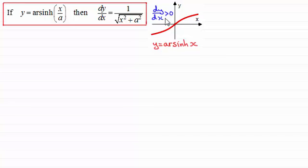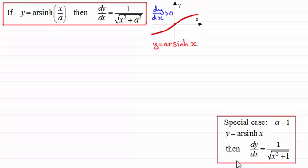So dy/dx is always going to be positive. Now, if a is equal to 1, we get the special case: y equals the inverse sine of x gives dy/dx equal to 1 divided by the square root of x squared plus 1. I would encourage you to try and remember these results, because we're obviously going to be using them in further differentiation and also in integration.